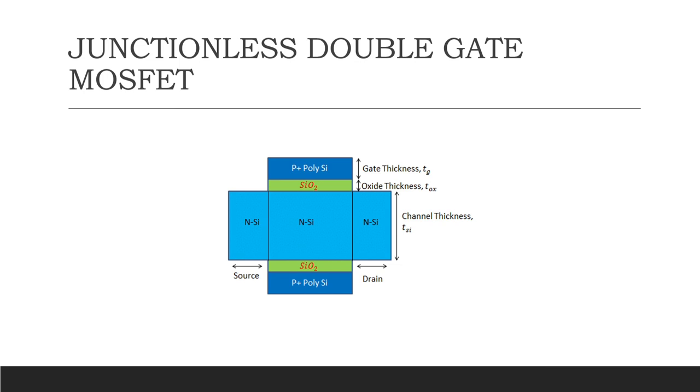What is the junctionless double gate MOSFET? It means a thin semiconductor film or a nano wire with extremely high doping all the way from the source to drain. To switch the drain current off, the gate is ordered to create full depletion underneath.